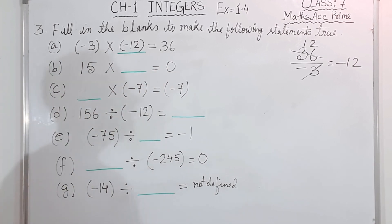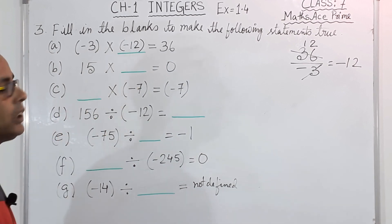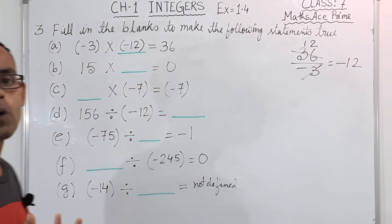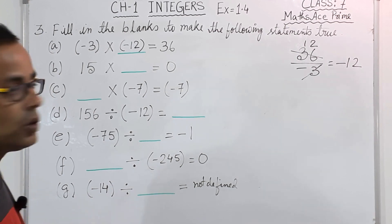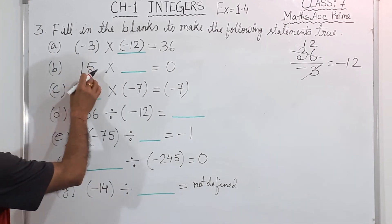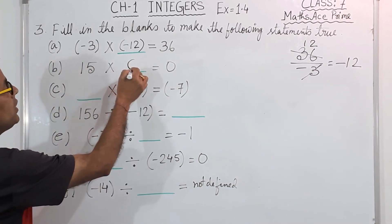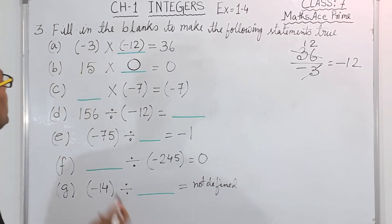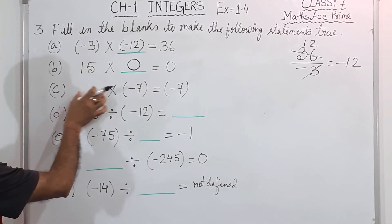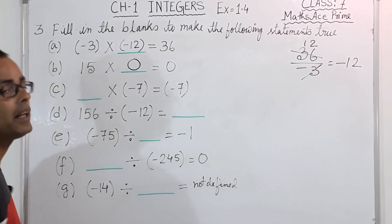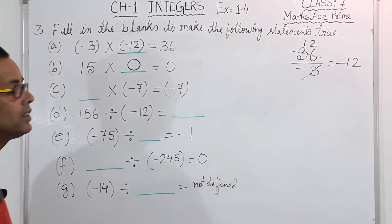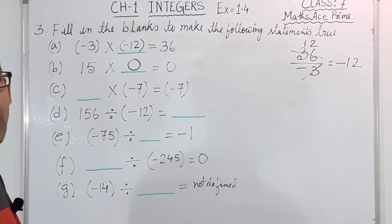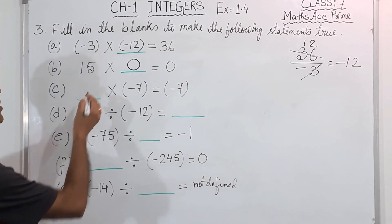Second one: 15 into dash equals 0. This is the property of zero — 15 into 0 will be 0 only. Then the next one: dash into minus 7 equals minus 7. This is the identity property. If you multiply 1 into minus 7, it will be minus 7 only.